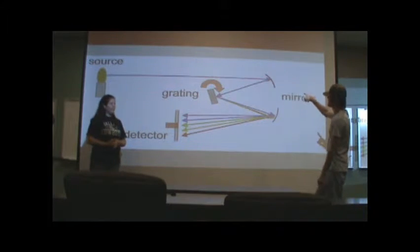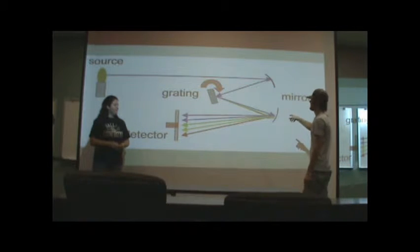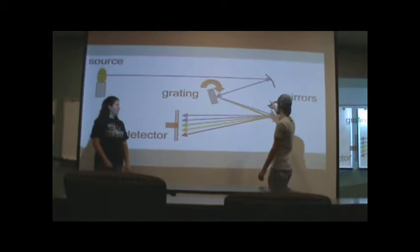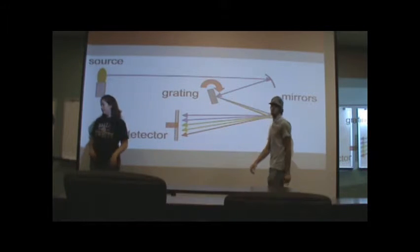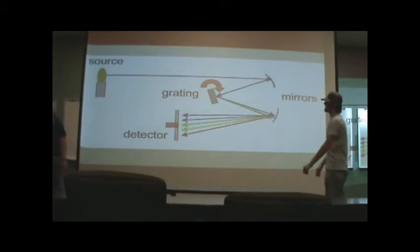We have one color coming in, and then it's reflected off the mirror, and then white light is coming in. Now we have all these different colors, and we only have this one color coming out because it's the only one that's that wavelength.